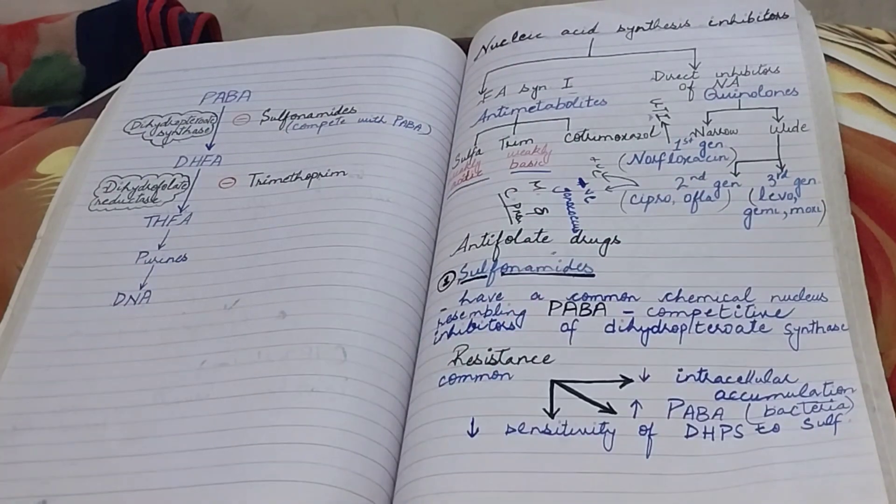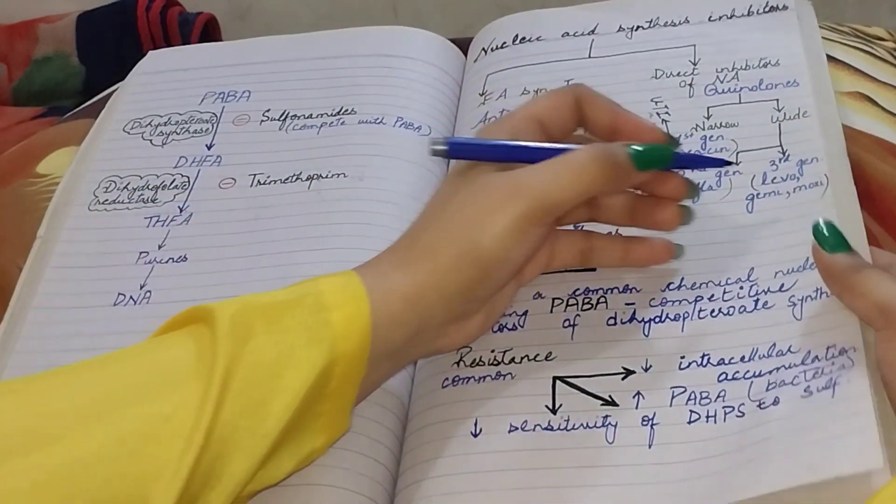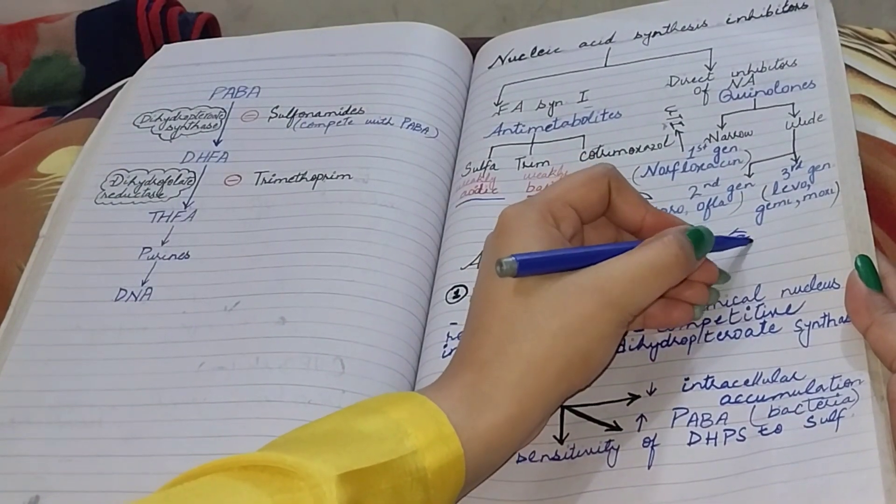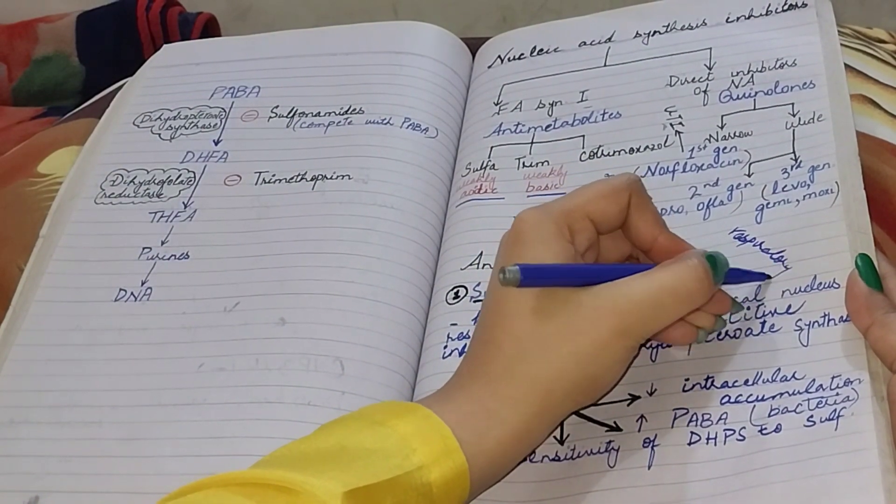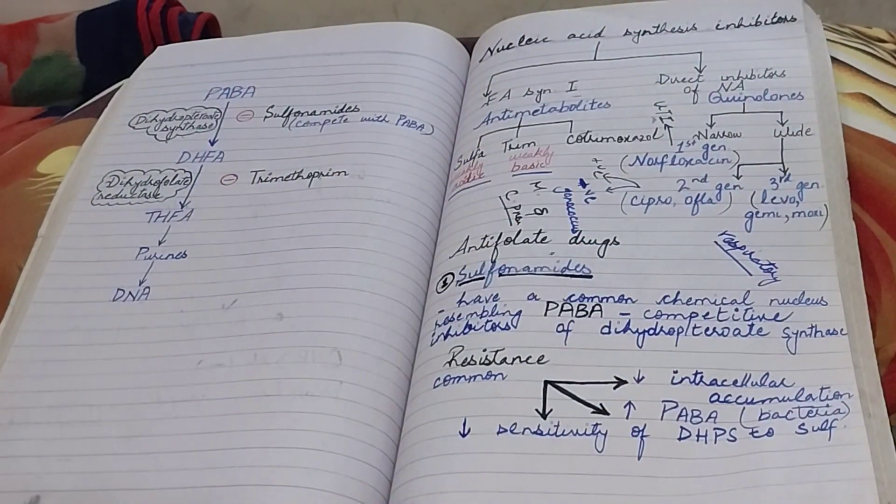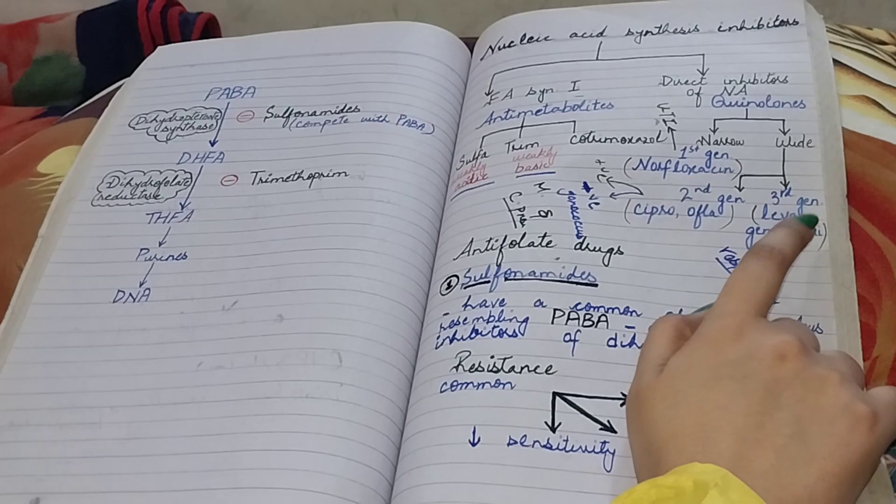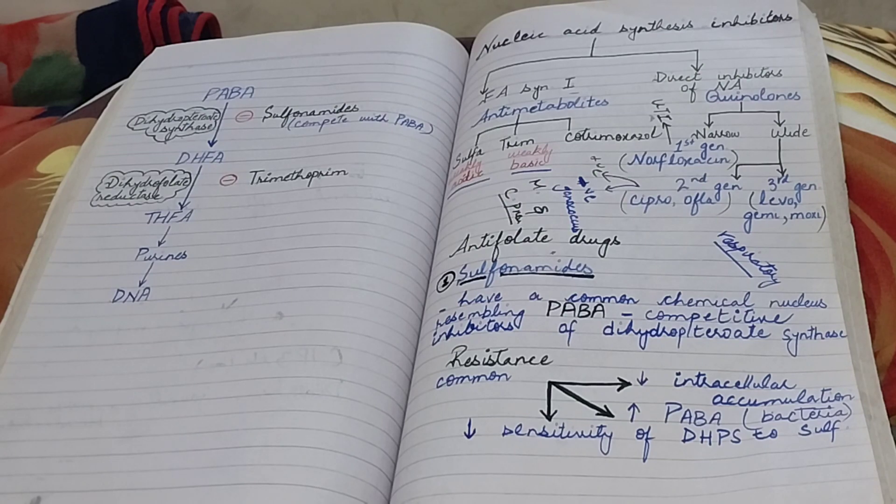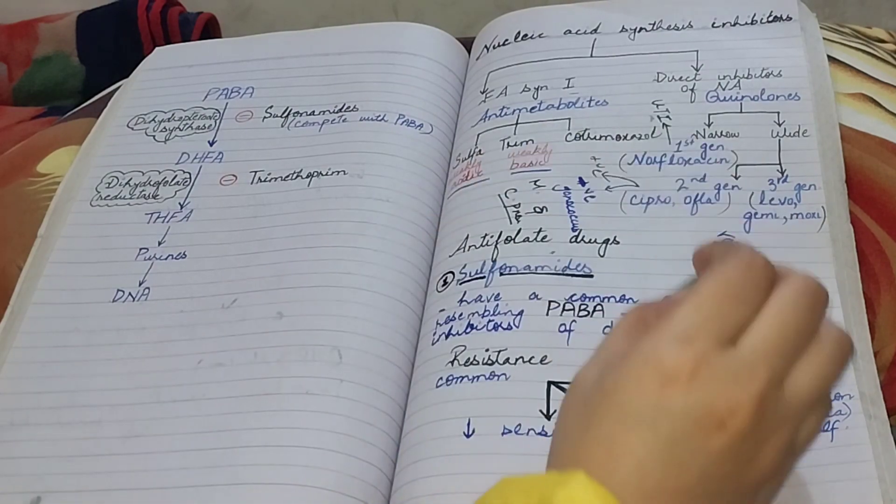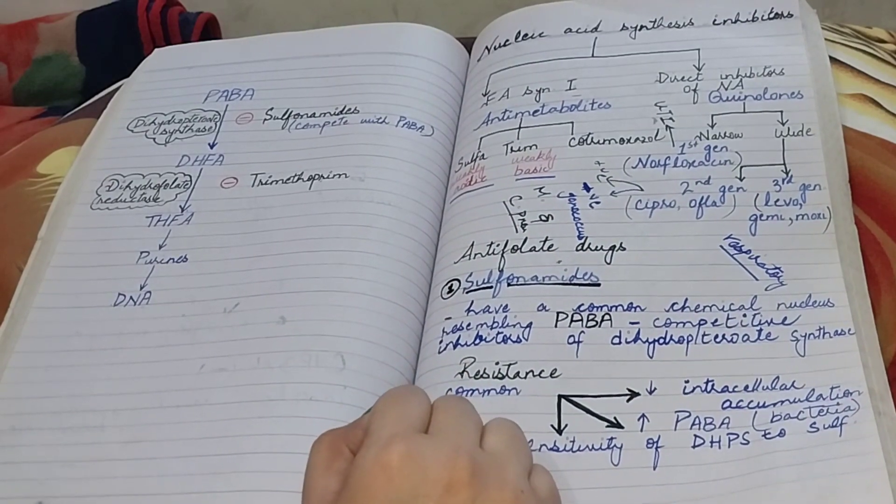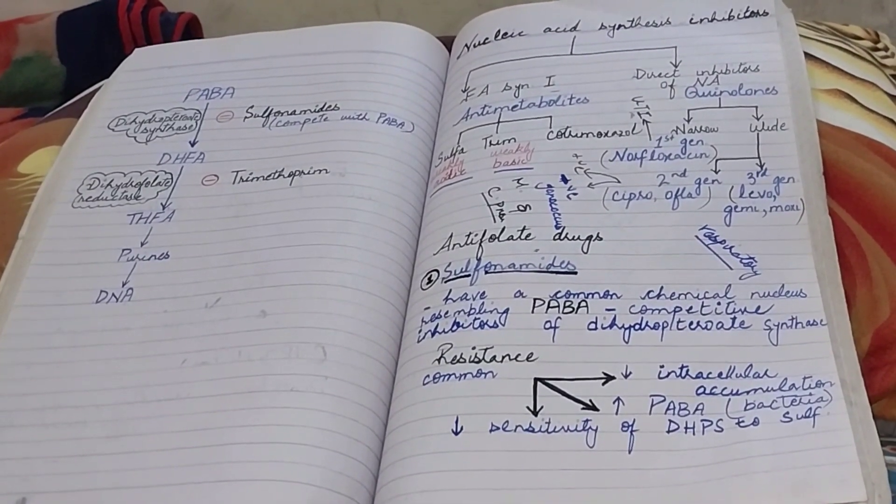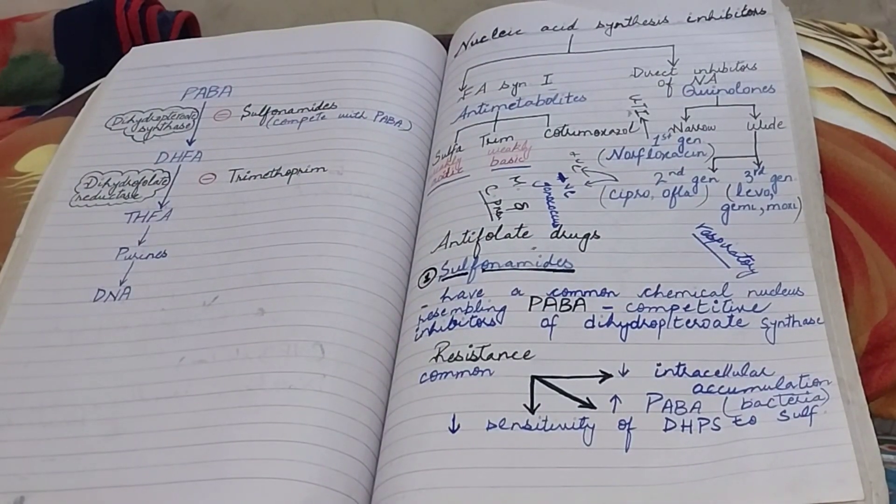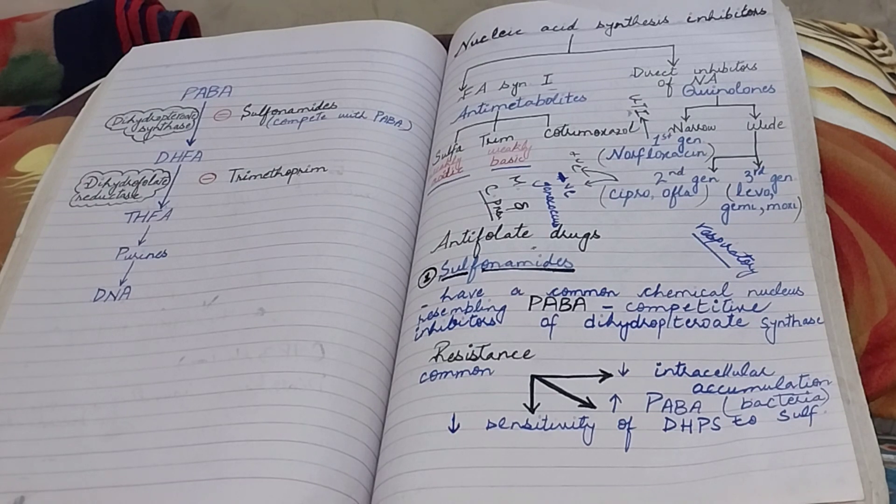In some books, gemifloxacin and ofloxacin are considered fourth generation fluoroquinolones. Gemifloxacin and ofloxacin are the broadest spectrum fluoroquinolones. They have enhanced activity against anaerobes. Did you remember one thing that aminoglycosides are not active against anaerobes because aminoglycosides need oxygen.